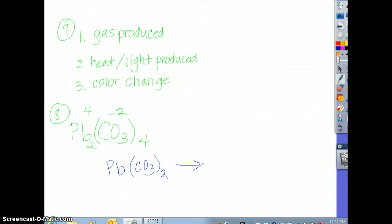How do you know a chemical reaction occurs? You will see three things. You will have a gas being produced. You will have heat or light being produced. Or you will have a color change. That's found in section 8.